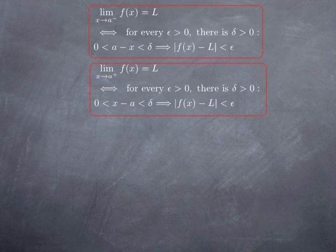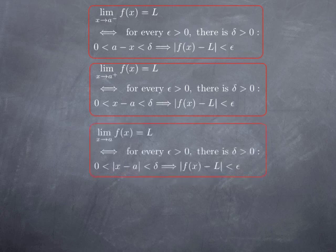Now if you rewrite these conditions for the limit from the left on top and from the right underneath, and compare with the formal definition for the regular limit, you see that the only difference is that we dropped the absolute value and looked at the two different cases for the value of the absolute value.